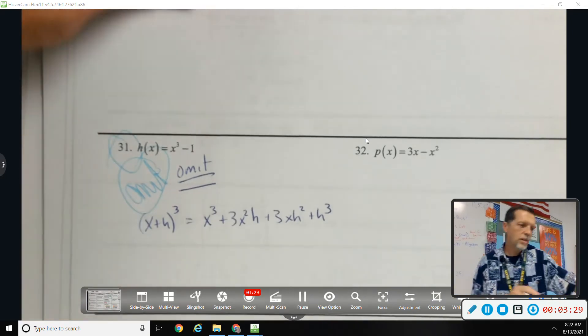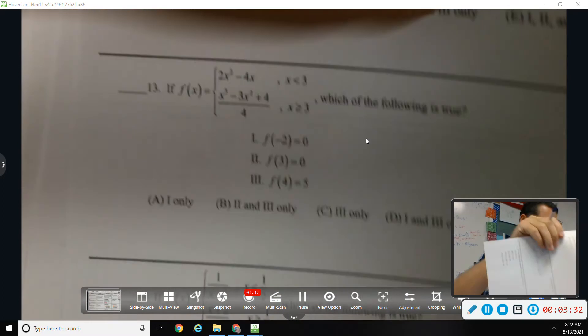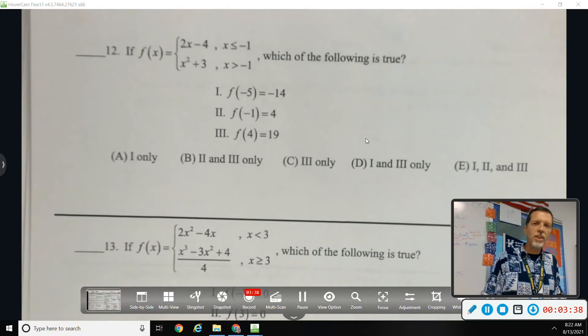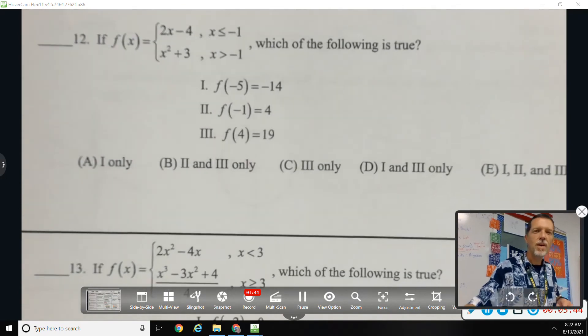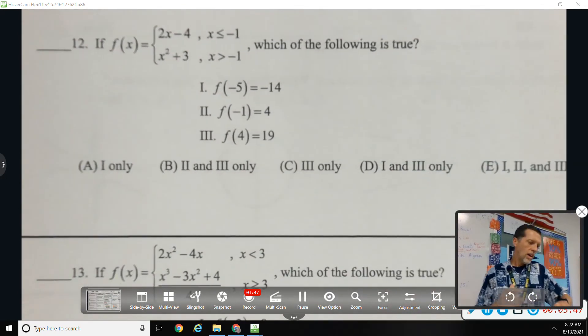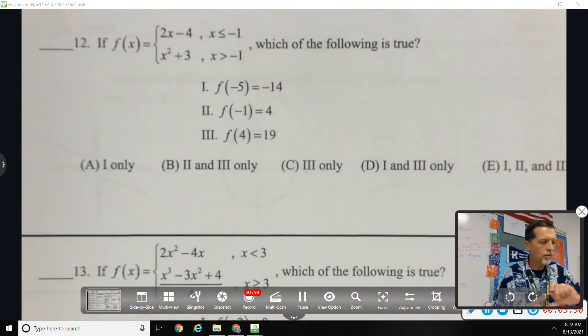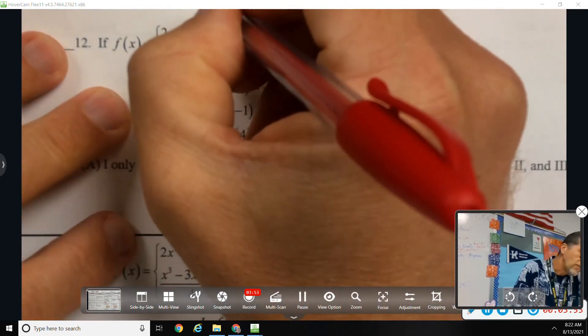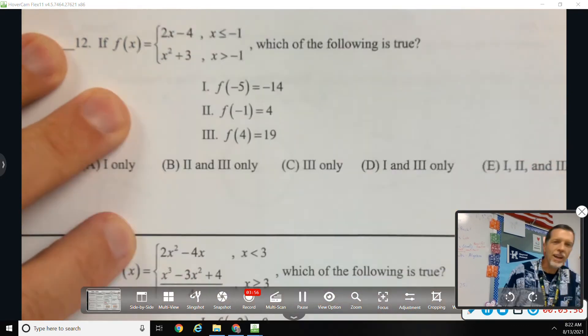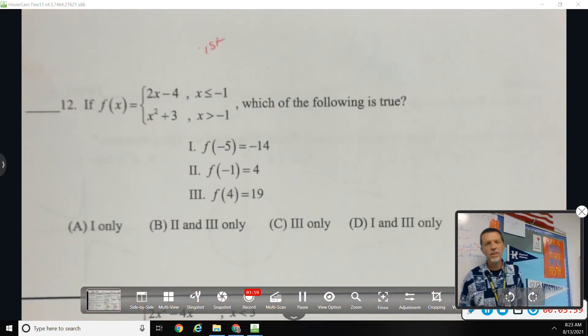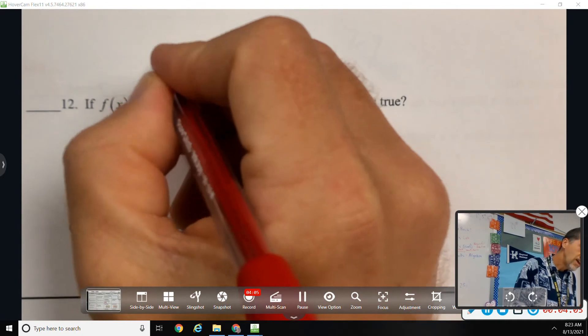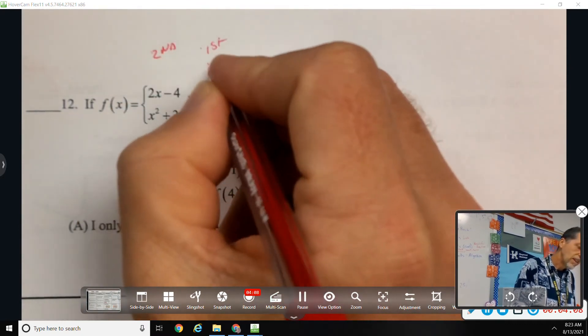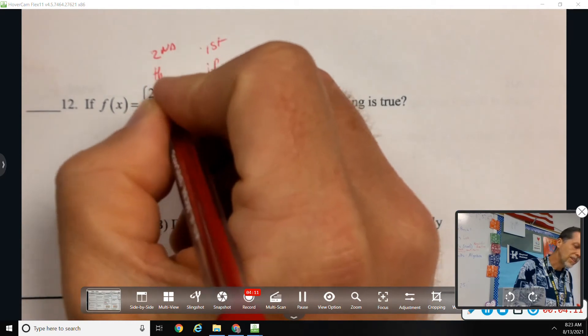Number 12, yes I can. Don't you love those one, two, three type statements? Forces you to do three problems even though it's one problem. Math teachers getting tricky on you. Let's see, f of negative five. You know what, let's back up and review piecewise functions in general. The first thing we'll use is the right hand column.